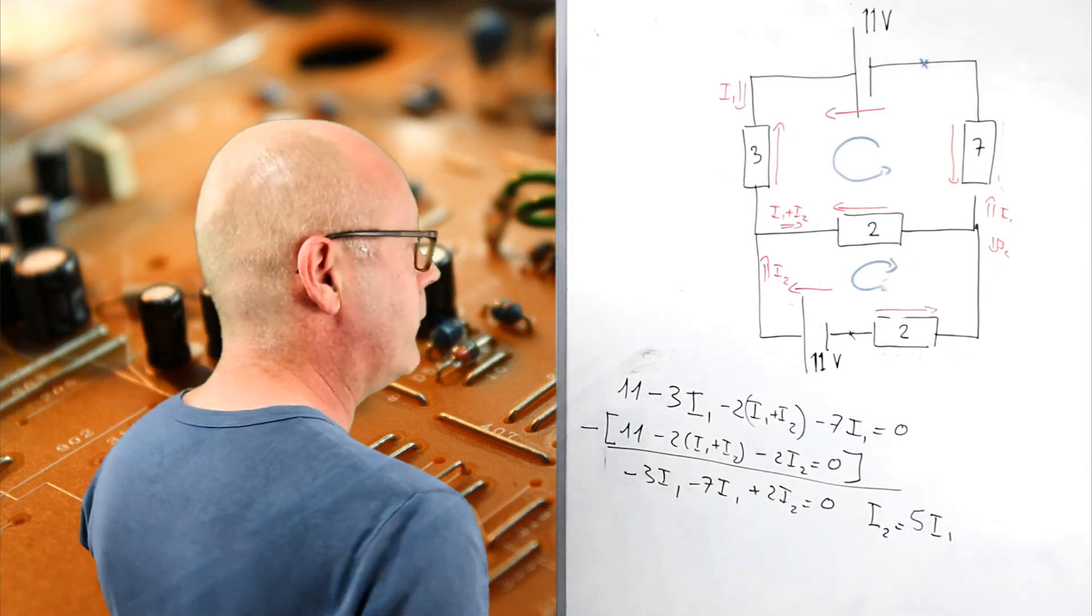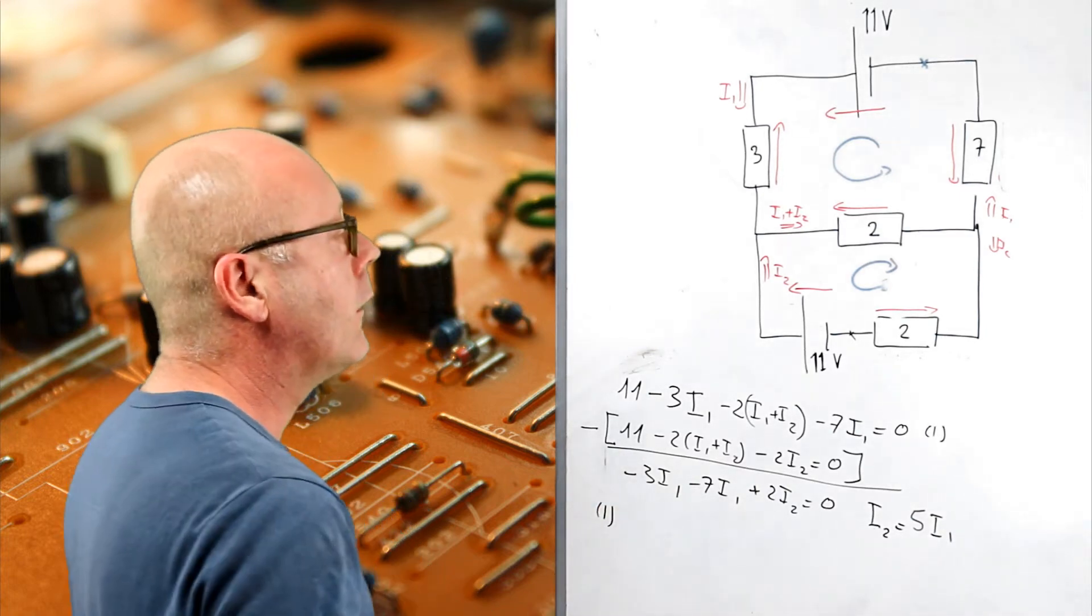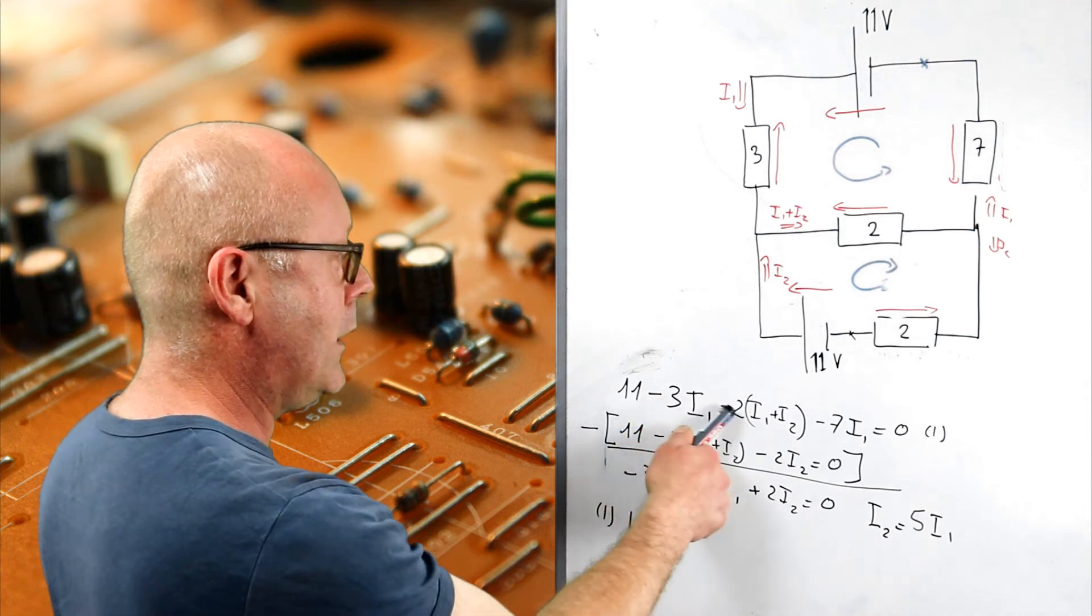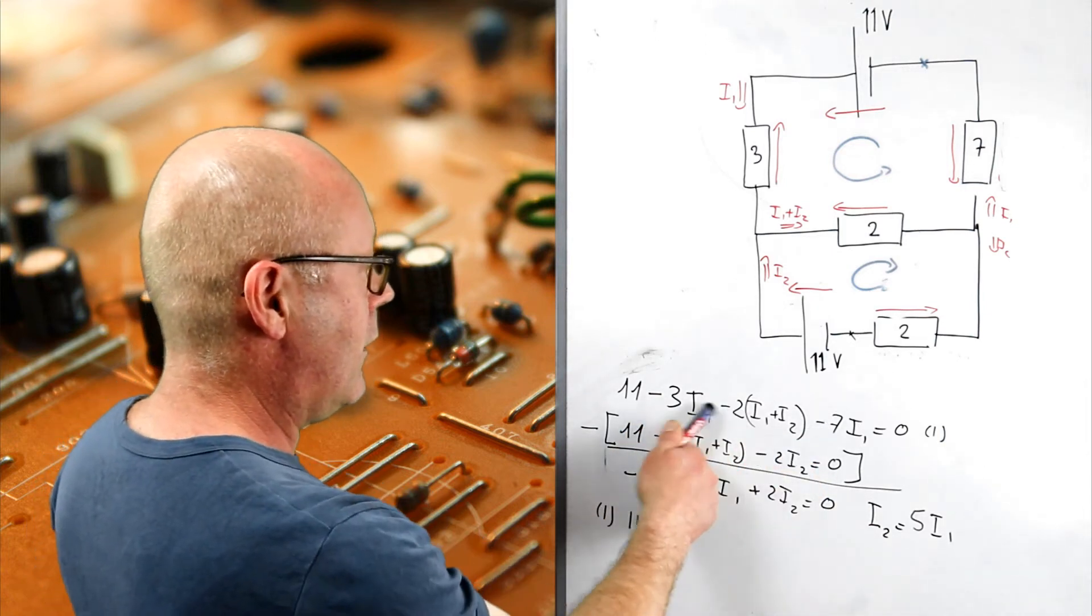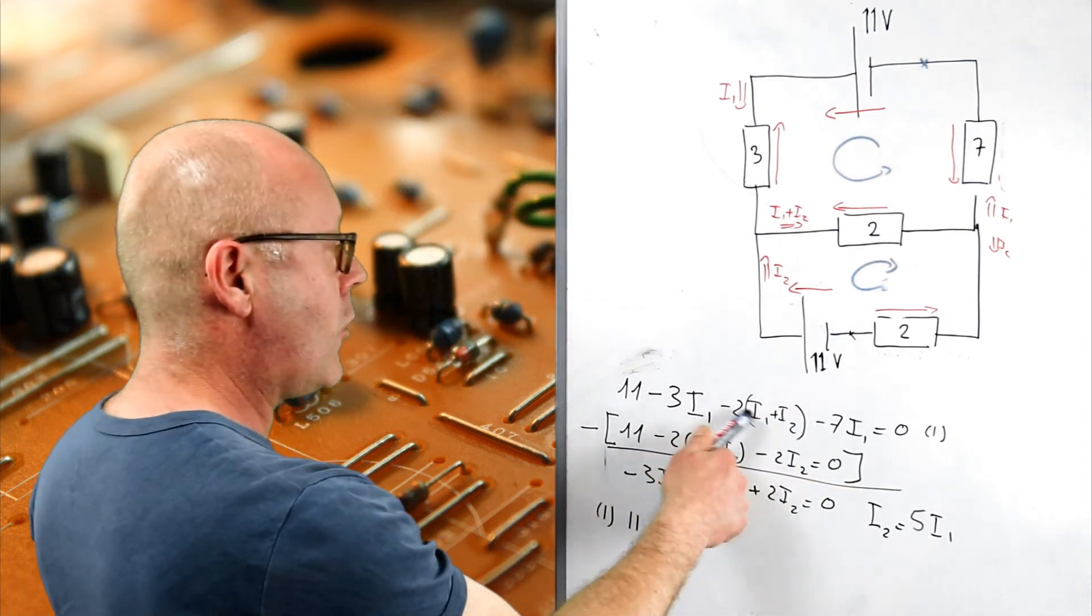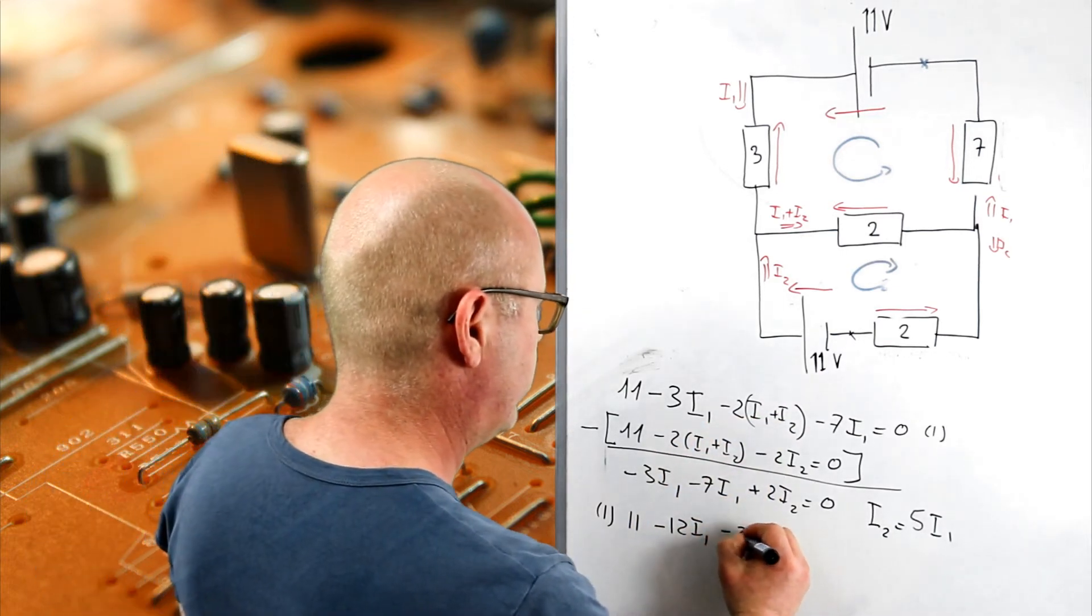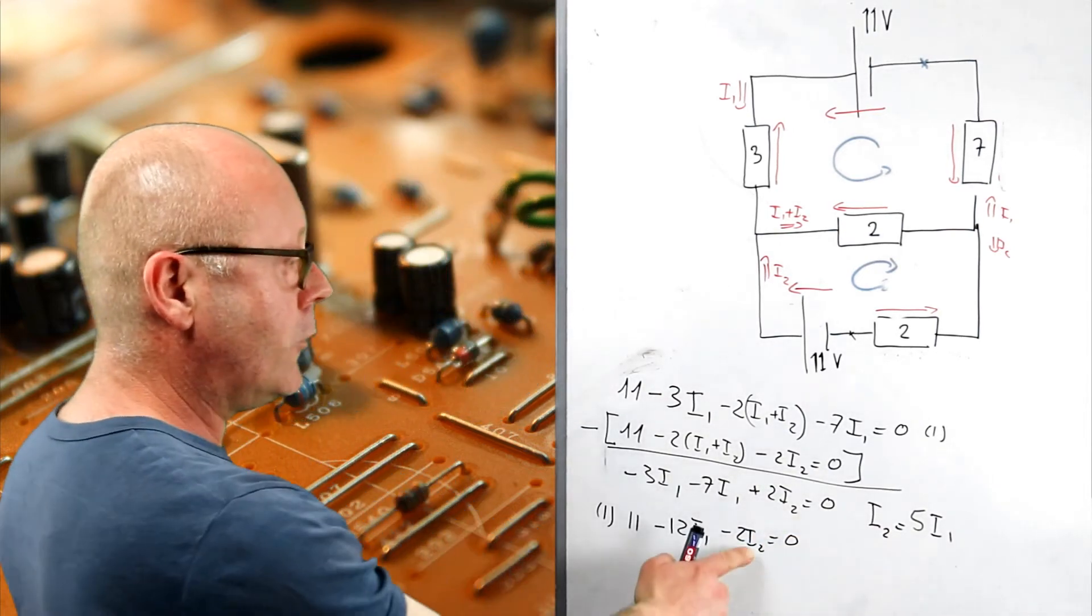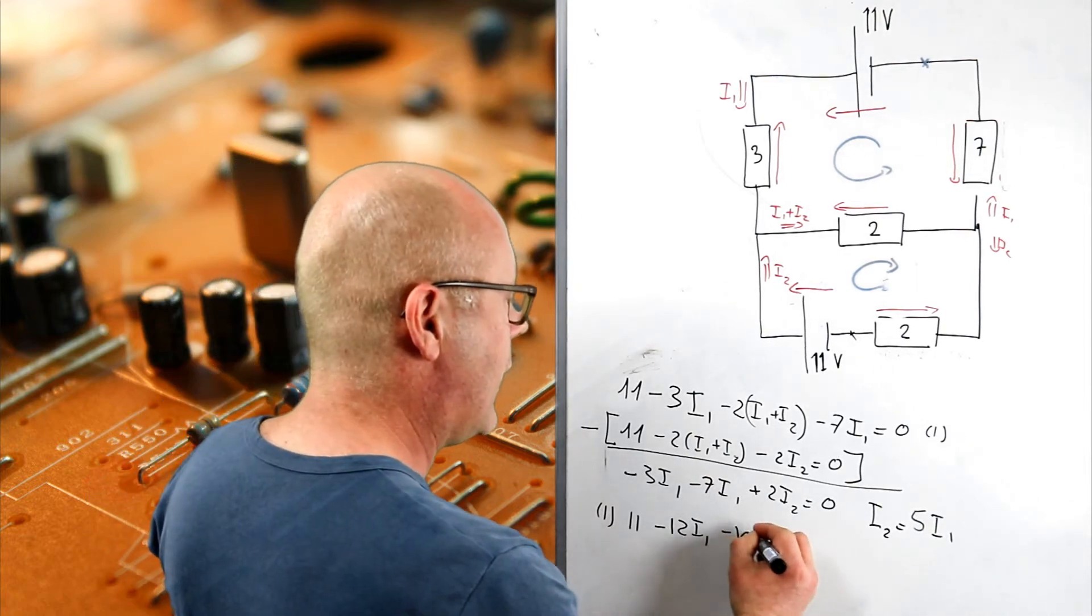So, I'll take this one. Equation 1. I've got 11. How many I1s do I have? I have minus 3, minus 2, minus 7. So, I've got minus 12 I1s. And I've got how many I2s? I've got minus 2 I2, equals zero. Minus 2 I2, I2 is 5 I1. So, actually, I've got minus 10 I1.